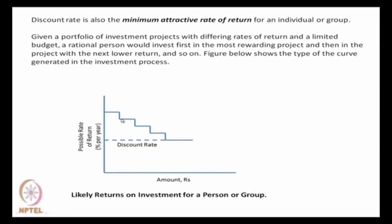I will continue investing in successive projects until my total money is exhausted. The minimum rate which I think is acceptable to me — which is higher than the bank interest rate and is acceptable to me — is the minimum attractive rate of return, and that is called the discount rate. This figure shows pictorially that discount rate is the minimum attractive rate of return at which an investor can invest its money in a project. That is the definition — discount rate is always greater than the interest rate.